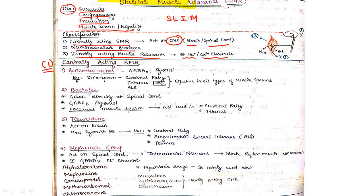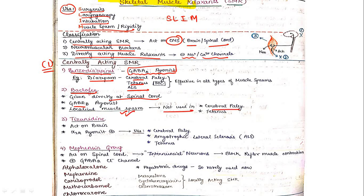The first group of centrally acting SMR is benzodiazepines, which are GABA-A agonists — example: diazepam — used for cerebral palsy, tetanus, and ALS. The second drug is baclofen, given directly at the spinal cord; it is a GABA-B agonist used for localized muscle spasm, but cannot be used for cerebral palsy or tetanus.